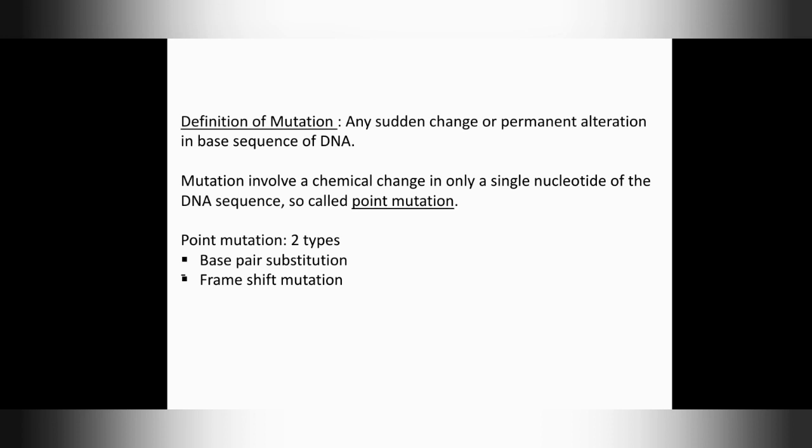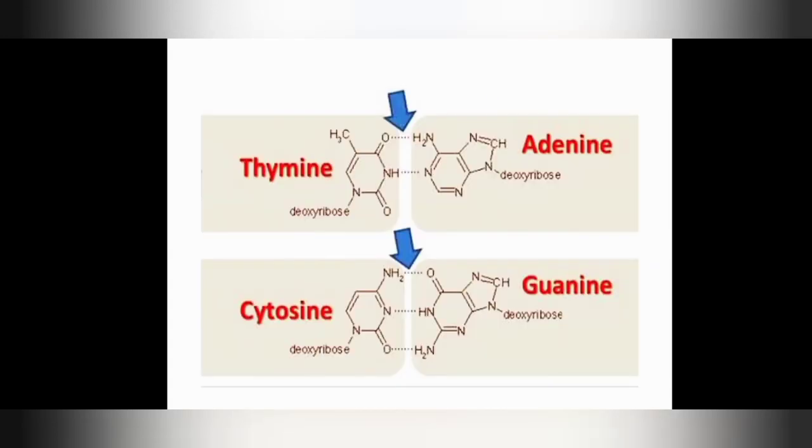In the case of translation, three bases form a codon. A codon consists of three bases, and these three bases form a frame. Each codon during translation codes for one amino acid. So three bases per codon — each codon specifies one amino acid.